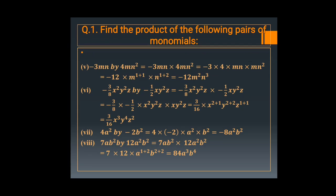Next: minus 3mn multiplied by 4mn square. Minus 3 multiplied by 4 equals minus 12. Then m into m — same variable, same base — so m power 1 plus 1 equals m square. And n into n square — power 1 plus 2 equals n cube. So the product is minus 12 m square n cube.